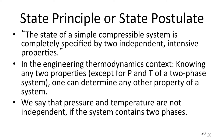An example of two properties that are not independent is when you have a two-phase system — one system with a pure substance, for example water, but the pure substance exists in two phases: vapor and liquid. If you have such a system, then the pressure and the temperature of the system are not independent. So that's what we mean by independent.